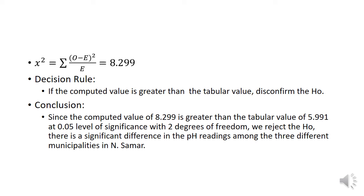For the chi-square computation, using the formula: chi-square equals the summation of (observed minus expected) squared divided by expected. We calculate: (1 − 4.7)² / 4.7 + (6 − 4.7)² / 4.7 + (7 − 4.7)² / 4.7 + (9 − 5.3)² / 5.3 + (4 − 5.3)² / 5.3 + (3 − 5.3)² / 5.3. This gives us a computed chi-square value of 8.299.